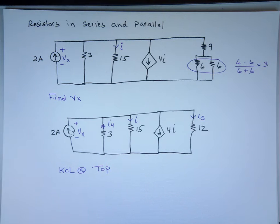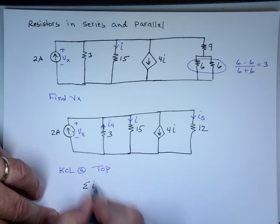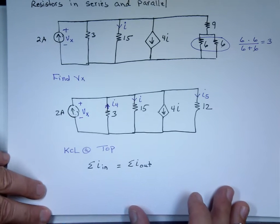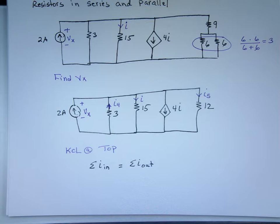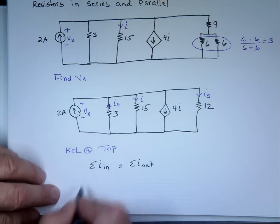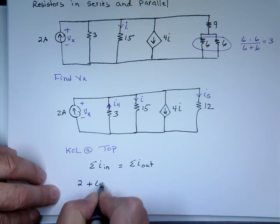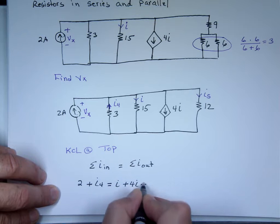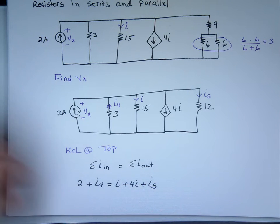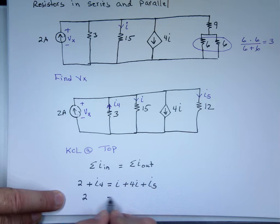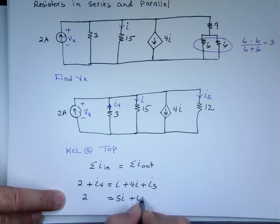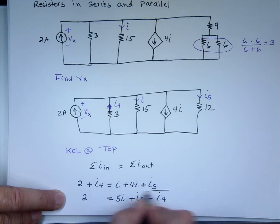Let's take the current going in equals the current leaving. The algebraic sum, the current entering the node should equal all the current leaving the node. Current in equals the current out. What is the current going to that node? The 2A plus I sub 4. And what's leaving that node? I plus 4i plus I5. Here's one equation with how many unknowns? Three. I and 4i is 5i plus I5 minus I4. I can't solve that equation, too many unknowns in it.